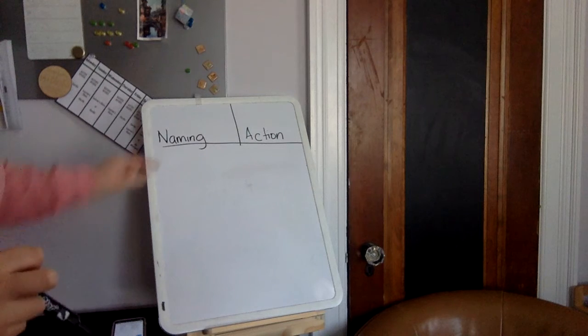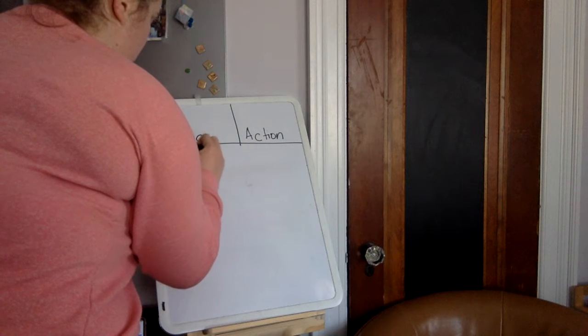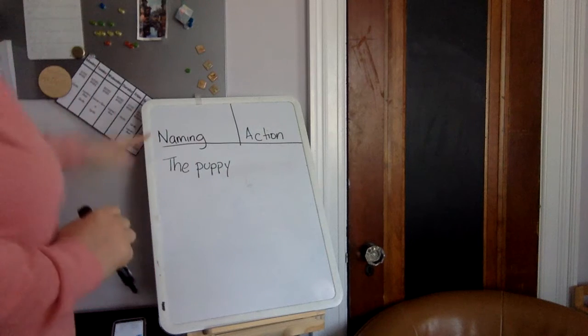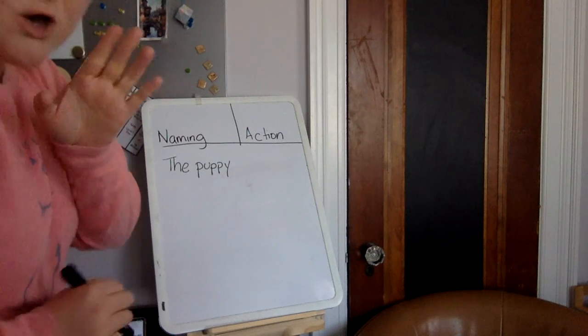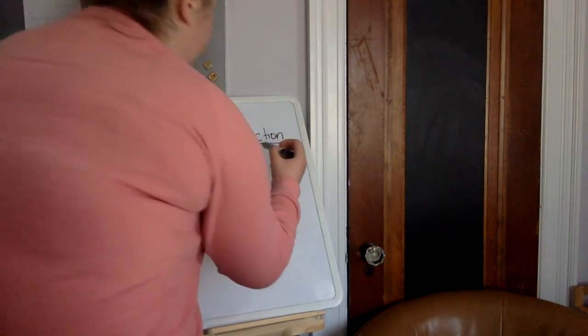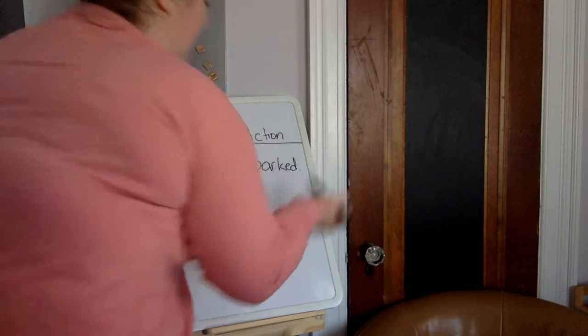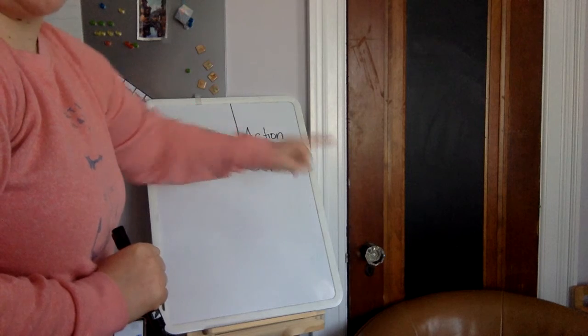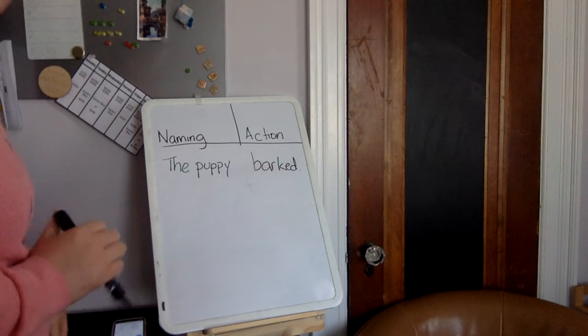All right, I'm going to stand over here. So we have a naming part and we're going to talk about the puppy. Look, we named the puppy and an action that the puppy can do is go woof woof, bark. The puppy barked. Don't forget, when you start a sentence, a capital, when you end a sentence, a period. That's our first sentence. The puppy barked. Let's do another one.